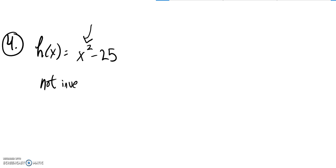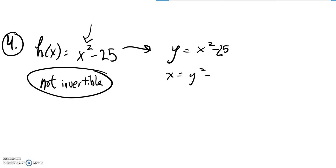So I could, if I see that right away, jump straight to not invertible. If I don't see it right away, and I just go through the process for solving this: switch x and y, add 25 to both sides.